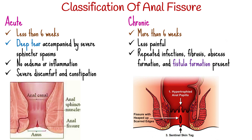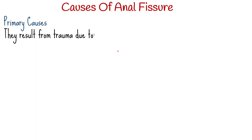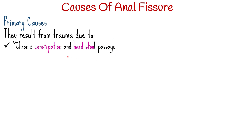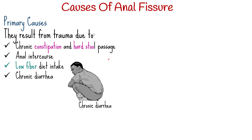The causes of anal fissure can be classified into primary and secondary causes. The primary causes are due to local trauma, mostly resulting from chronic constipation and hard stool passage. Other causes of trauma to the anal canal include anal intercourse, low-fiber diet intake, chronic diarrhea, and chronic spasm.